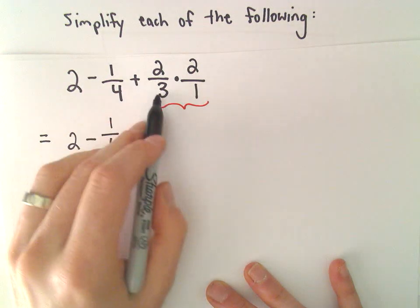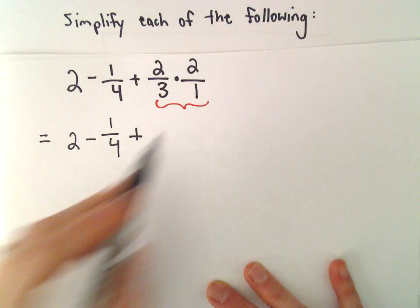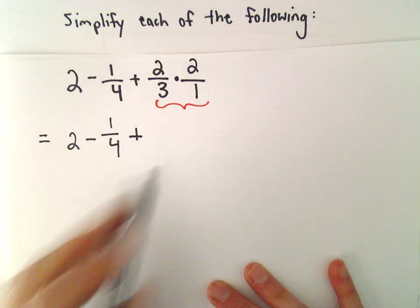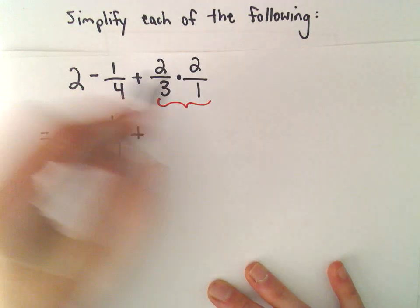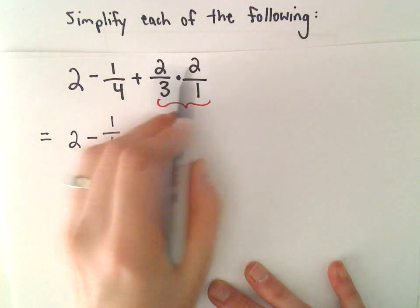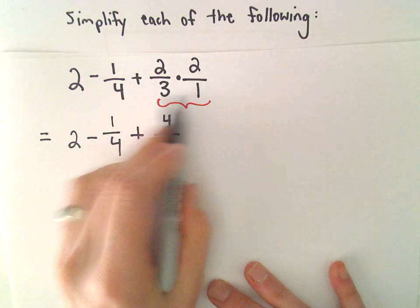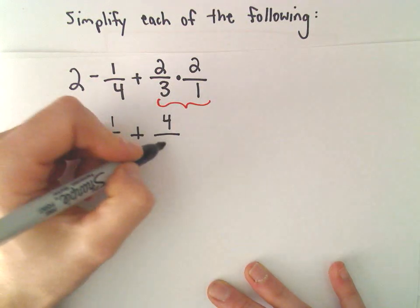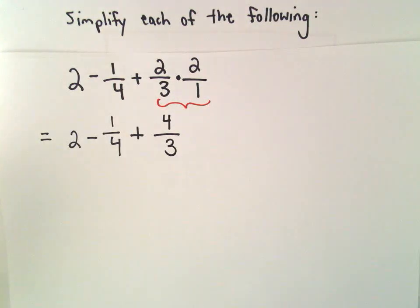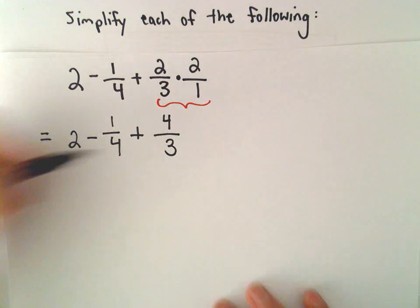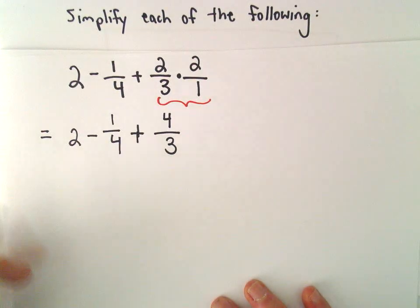We've got a positive 2 thirds times a positive 2, so that's going to be positive. To multiply fractions, we just multiply in the numerator: 2 times 2 will be 4. Then we multiply in the denominator: 3 times 1 will be 3. So we have 2 minus 1 fourth plus 4 thirds.